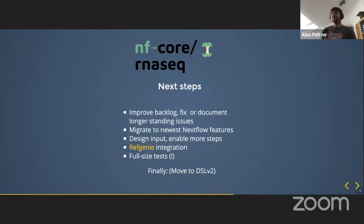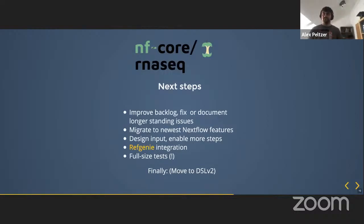One of the biggest upcoming changes that will make the pipeline less complicated is the move to DSL version 2, so we can strip out certain functionality and keep it modularized. This way users can help develop specific aspects of the pipeline without breaking the overall pipeline, which will hopefully make the entire code base less cluttered.